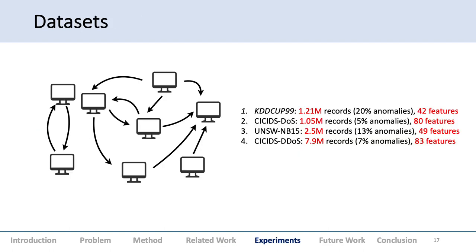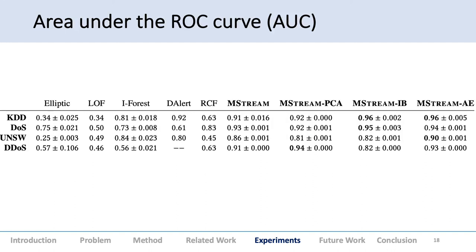The experiments used four datasets: KDD Cup, DDoS, CICIDS-DoS, UNSW, and DDoS with 1.21, 1.05, 2.5, and 7.9 million records respectively. These are the anomaly percentages and number of features. For area under the curve, we observed M-STREAM with autoencoder is usually the best in some places. M-STREAM with information bottleneck and PCA are also good. This is the raw M-STREAM performance—everything more than 90%. Random cut forest and DenseAlert are worse.